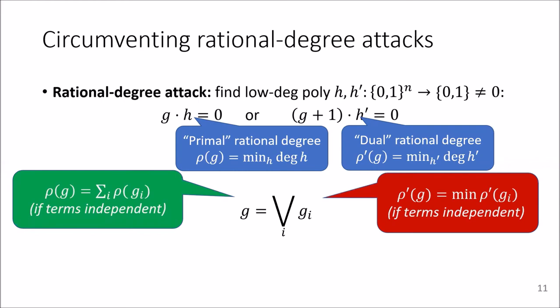But on the other hand, what we show in this work, what we can provably show, is that it does something to the primal rational degree. And namely what it does, if all the terms are independent, so operate on disjoint set of variables, then the primal rational degree is the sum of all the primal rational degrees of the underlying terms.